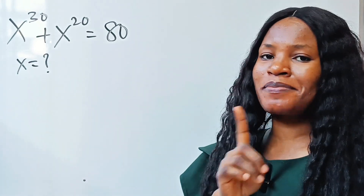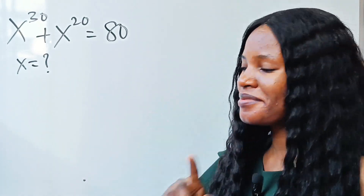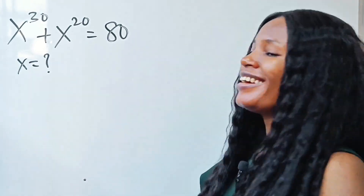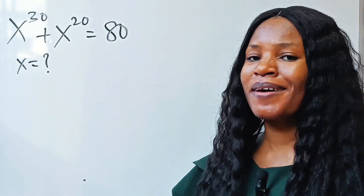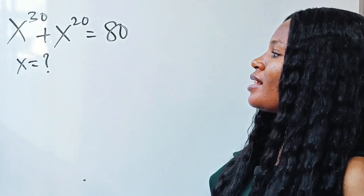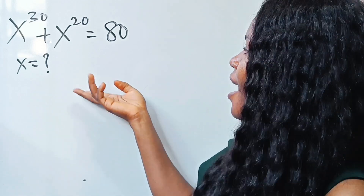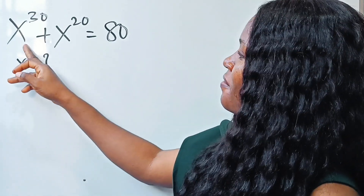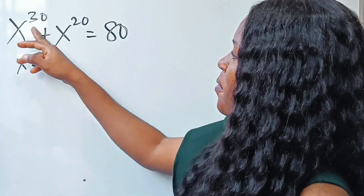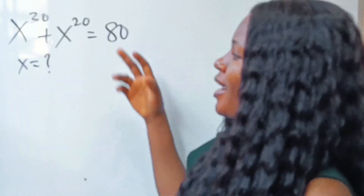This question is not smiling at all — it is not smiling, seriously. But let's solve it together. How can we find the value of x to the power of 30?